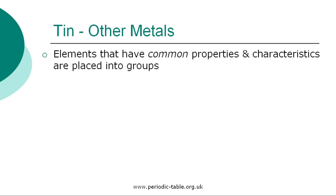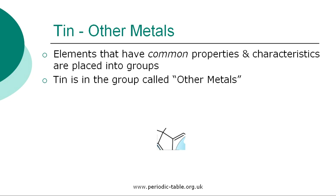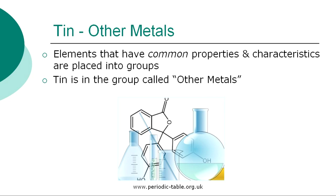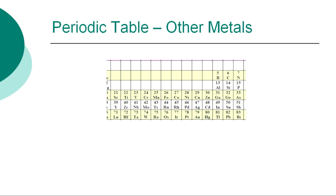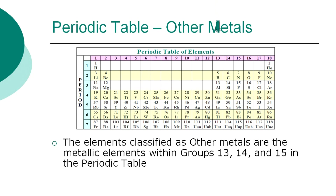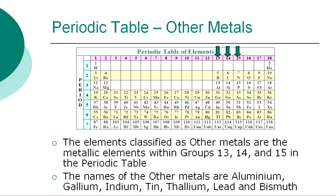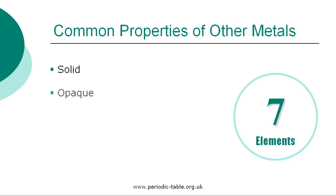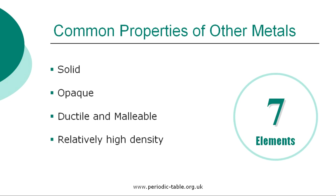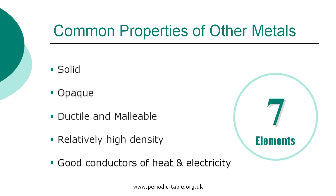Once the properties of an individual element have been identified, it is placed into a group of elements which have common properties and characteristics. Tin is in the group called the Other Metals. The seven elements classified as Other Metals are the metallic elements within groups 13, 14, and 15 in the periodic table. The names of the other metals are aluminum, gallium, indium, tin, thallium, lead, and bismuth. The other metals are solid, opaque, ductile, and malleable, and have a relatively high density. They are also good conductors of both electricity and heat.